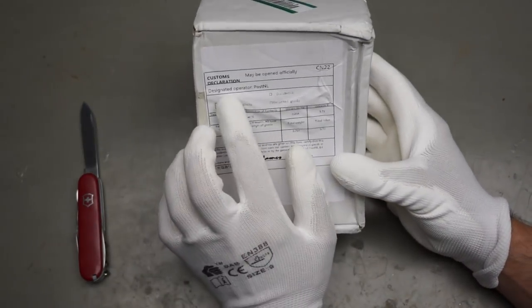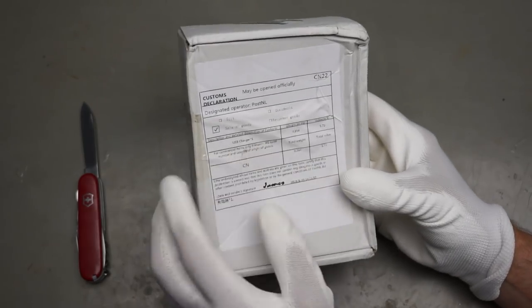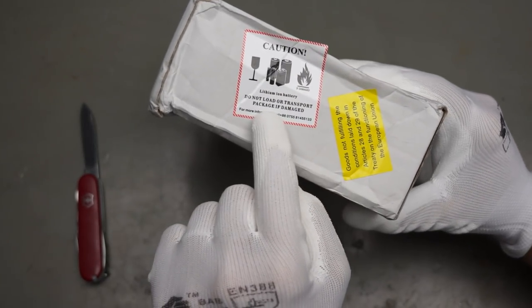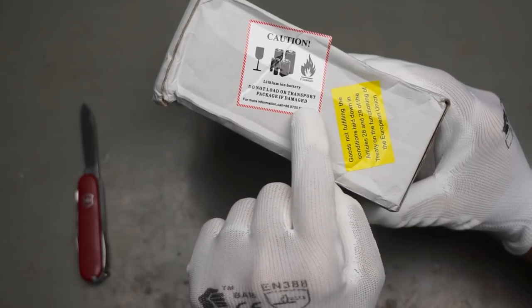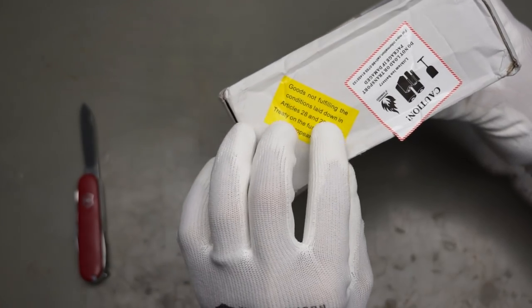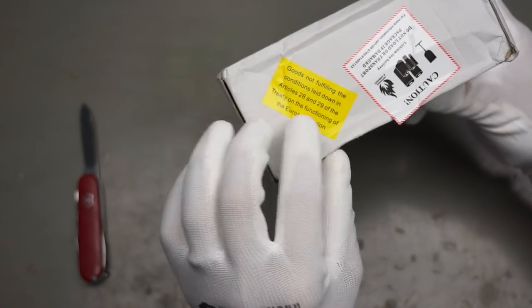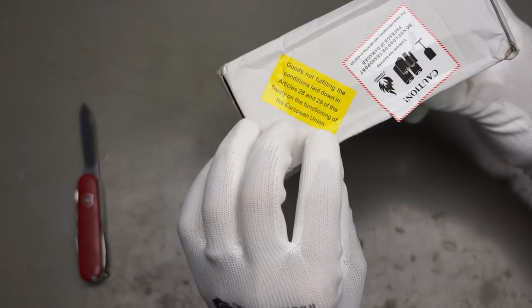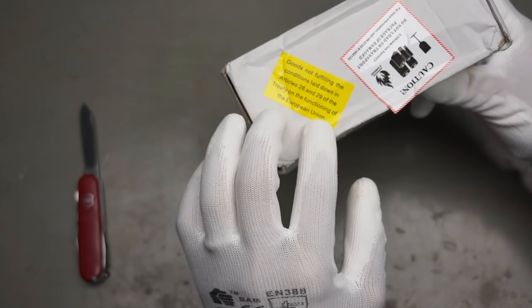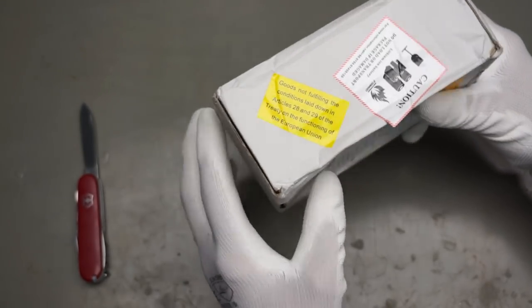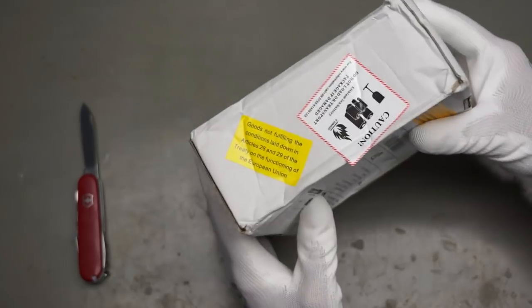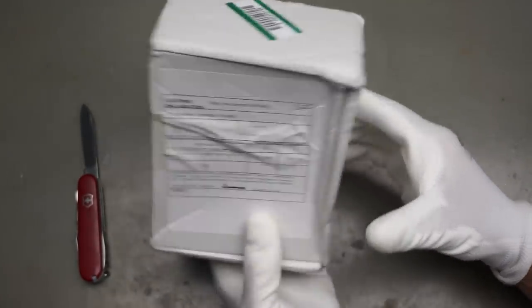The first one comes from Post Netherlands, very special and very dangerous. Caution, do not load or transport package if damaged. And here even worse, goods do not fulfill the conditions laid down in articles 28 and 29 of the Treaty on the Functioning of the European Union. So we hope that we do not damage the functioning of the European Union because actually Switzerland is still not part of it and I do not want to be guilty for damaging any functioning of this organization. So let's open this dangerous package.